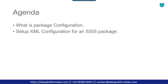Once you are done with the SSIS package code, you can add the package configuration to the SSIS package. Then you can copy the same SSIS package along with the configuration file to the production server. At the production server, you don't need to modify the value of the connection string in the SSIS package. Instead, you can open the configuration file and modify the connection string there. This way you don't need to touch your SSIS package and you can pass a different value to it through the configuration file.